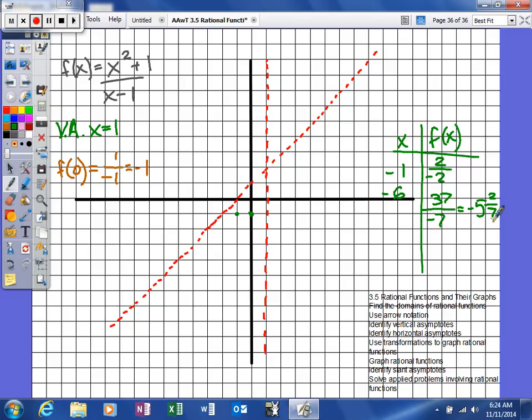So we plugged in negative 6, and we're plotting that point at approximately negative 5 and 2 sevenths. So again, we probably have enough points to be able to help us out.